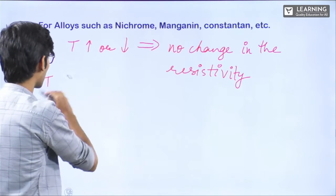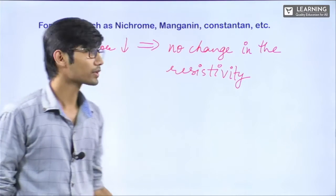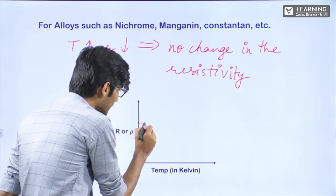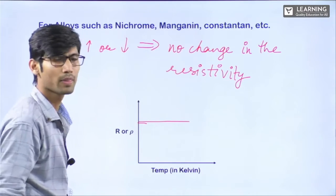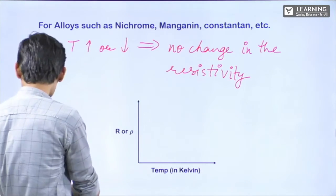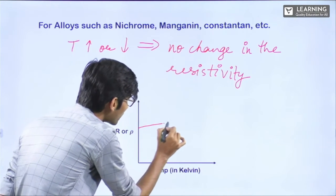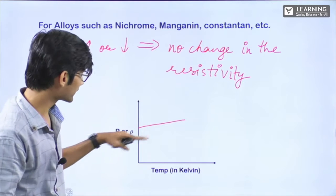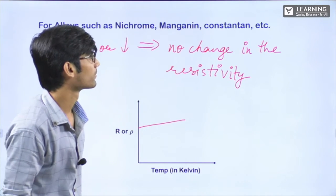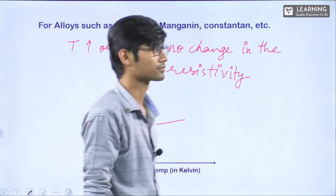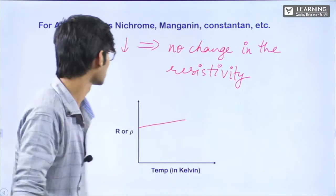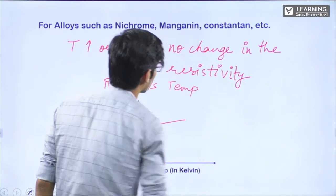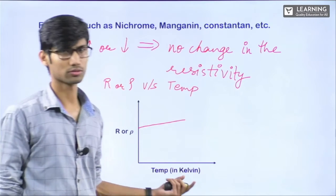For the graph of R or ρ versus temperature for these alloys: they have some initial resistivity, and it remains constant — so it should be a flat horizontal line. But experimentally, a slight change happens — it goes up very slightly. Obviously they are conductors, so slightly on increasing temperature it increases, but very slightly.